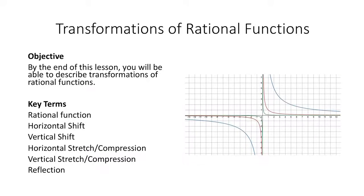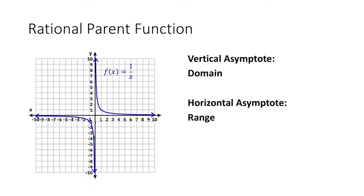In this video, we're going to talk about how to describe transformations of rational functions. This is the rational parent function, given by the equation f of x equals 1 over x. Let's go ahead and describe its key characteristics.